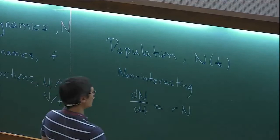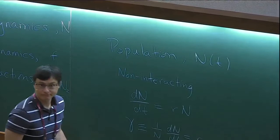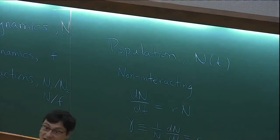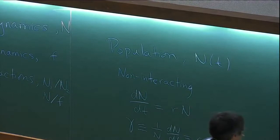For exponential growth, the per capita growth rate — 1/N dN/dt — is just some constant. The important thing is that this constant is not a function of the size of the population. If it's positive, the population grows to infinity; if it's negative, it shrinks to zero. The key point is that this quantity is not a function of population size.